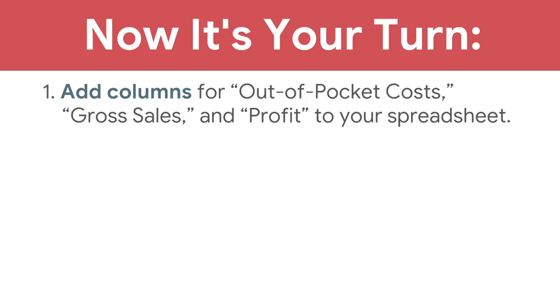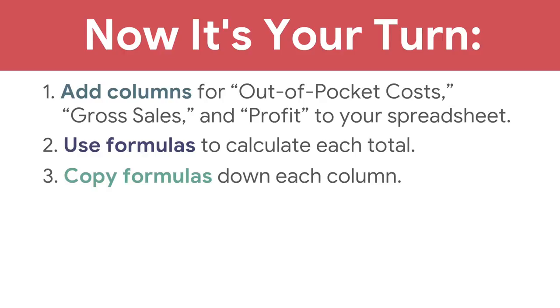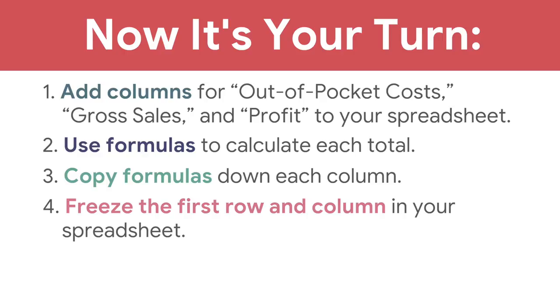You've learned so much about calculating your inventory and expenses. Consider this data when determining which products are most valuable for your business. Even if you like an item, if it isn't profitable, it's probably not worth selling. Now it's your turn: add columns for out-of-pocket costs, gross sales, and profit. Use formulas to calculate each total, copy formulas down each column, and freeze the first row and column in your spreadsheet.